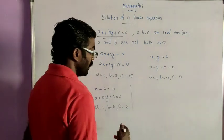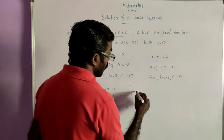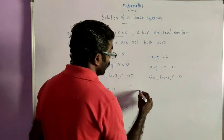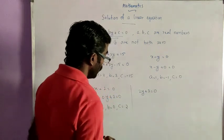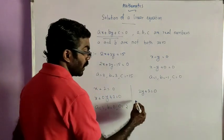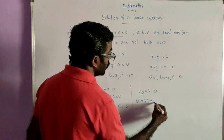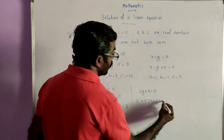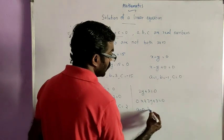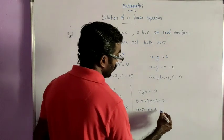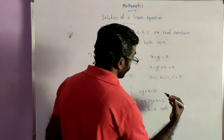Another situation is where there may not be an x term. For example, 2y plus 3 is equal to 0. Here we can write 0 times x plus 2y plus 3 is equal to 0. So here a is equal to 0, b is equal to 2, and c is equal to 3.